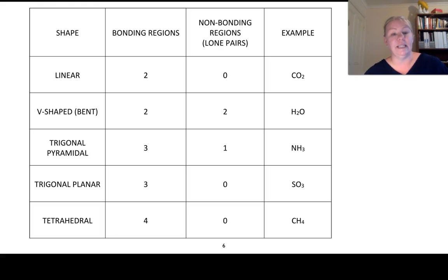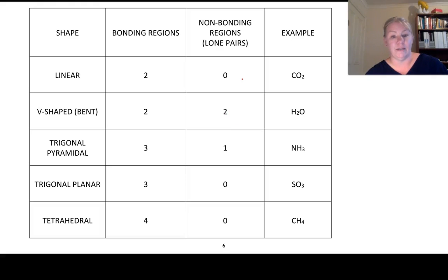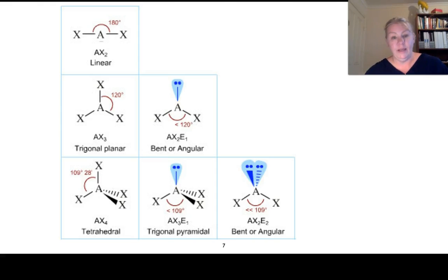The shapes we need to know are linear, V-shaped or bent, trigonal pyramidal, trigonal planar, and tetrahedral. Looking at non-bonding regions for each: carbon dioxide has no non-bonding regions; V-shaped molecules have two non-bonding regions; trigonal pyramidal has one; trigonal planar has none; and tetrahedral has none. We can also refer to V-shaped as bent or angular.